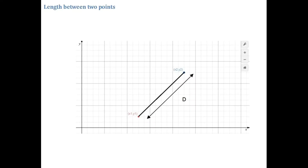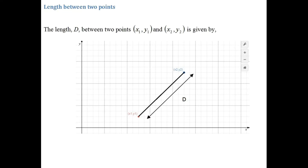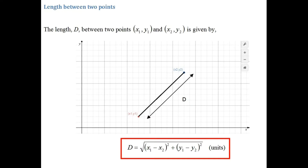We have another result that will help us calculate the length or the distance between two points. If we have two points with coordinates x1, y1 and x2, y2, I'm going to go through a formula to work out the length or the distance d. The length d between two points is given by: d equals the square root of (x1 minus x2) squared plus (y1 minus y2) squared.